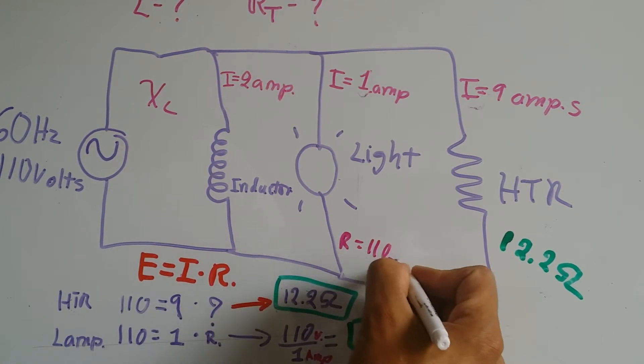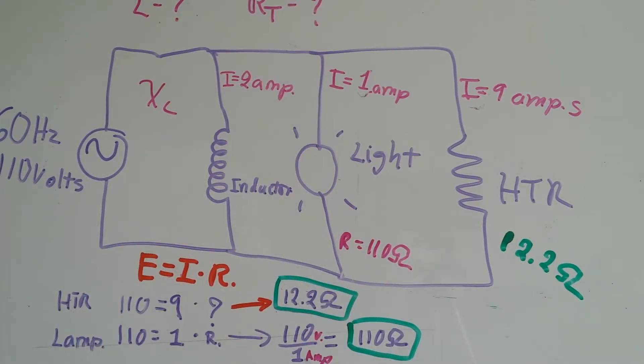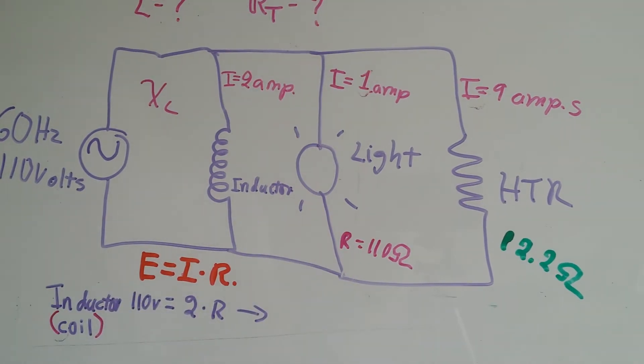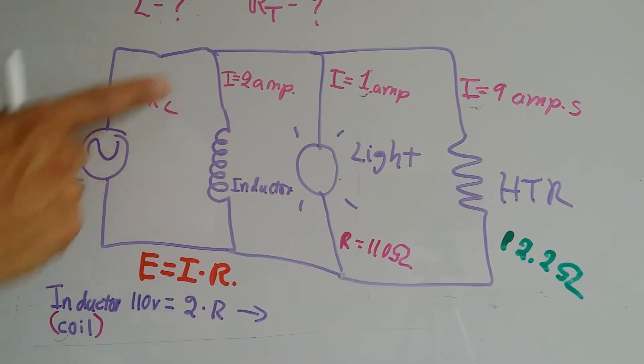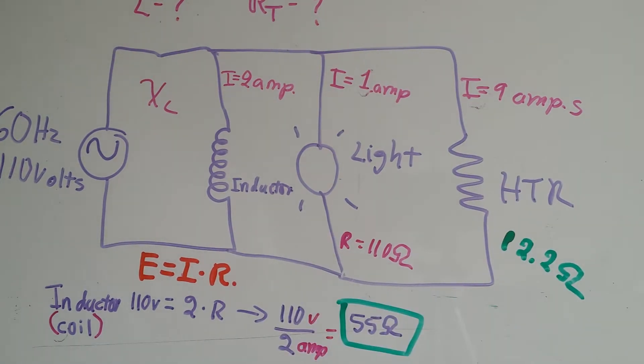For the inductor, I cleared the other values to have more space. We got the same scenario: 110 volts, but now that branch has only 2 amps. Let me rearrange the equation. I end up with 110 volts divided by 2 amps, which equals 55 ohms.